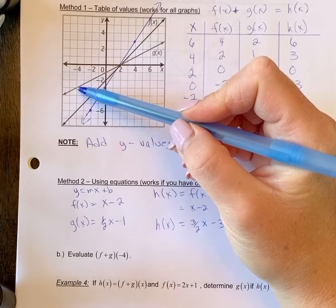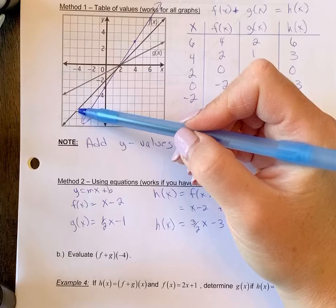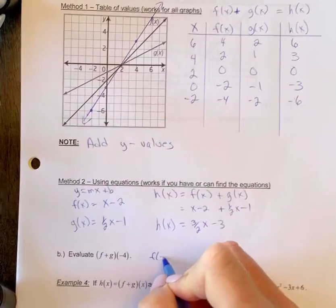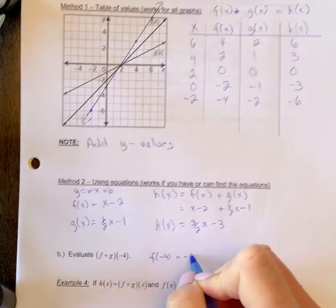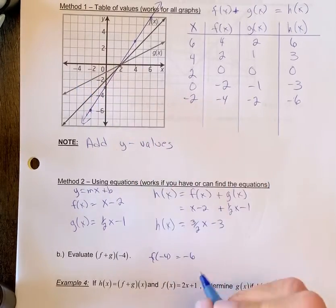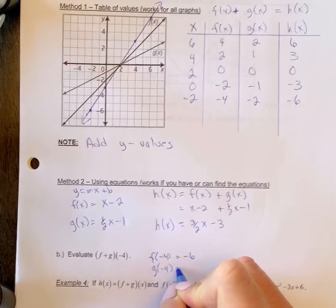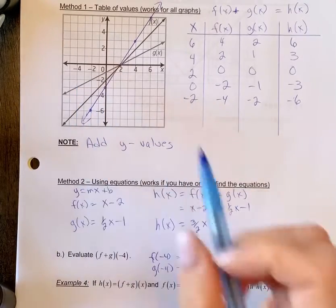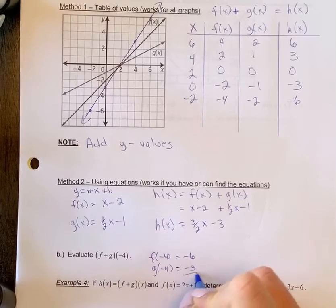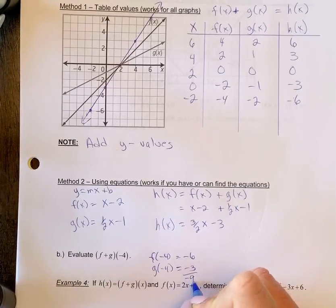and we find the f of x graph, which is down here. So f of negative four is negative six. And then if we go g of negative four, and we look that on the graph, right here is negative three. So it says to add them, so we have negative nine.